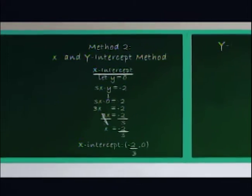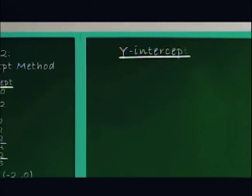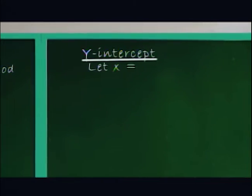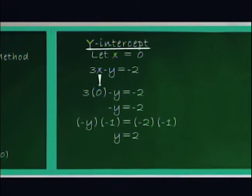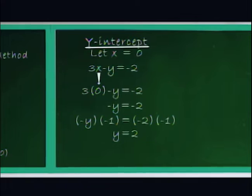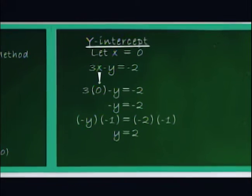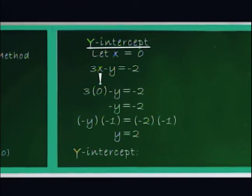In the same way, to find the y-intercept, we let x be equal to 0 and solve for y, and we will get y equals 2. Therefore, the y-intercept is 0, 2.